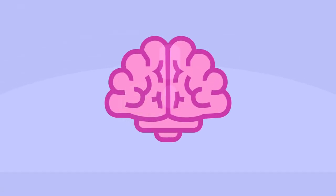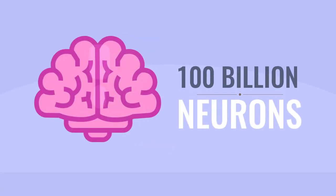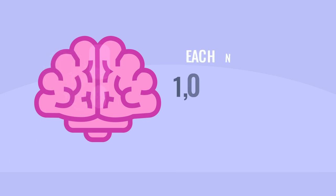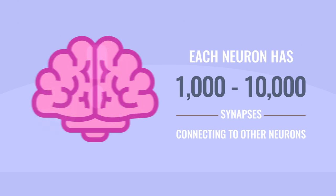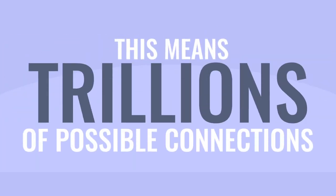The brain is made up of approximately 100 billion neurons. Each one of those neurons has 1,000 to 10,000 synapses connecting to other neurons. Mathematically, this means trillions of possible connections.